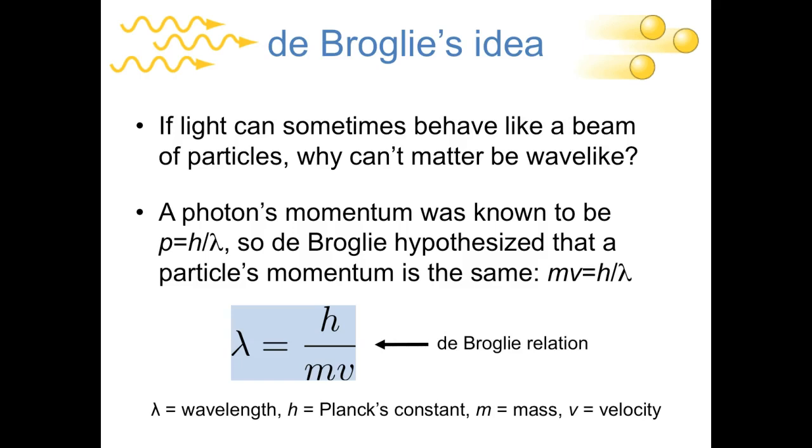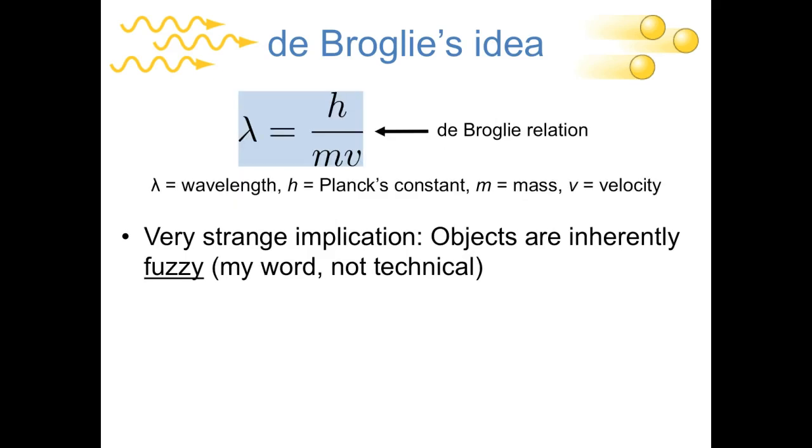So the very strange thing about this equation that I want to emphasize is that this equation is telling us the wavelength of an object, the wavelength of matter, not the wavelength of a light wave or something like that. So this implies that all of the objects around us have a wavelength. And this is very strange. The implication is that objects are inherently fuzzy, that you can't know exactly where an object is.